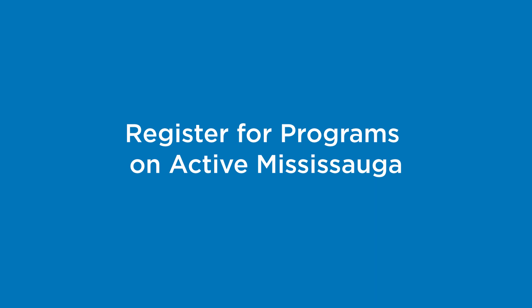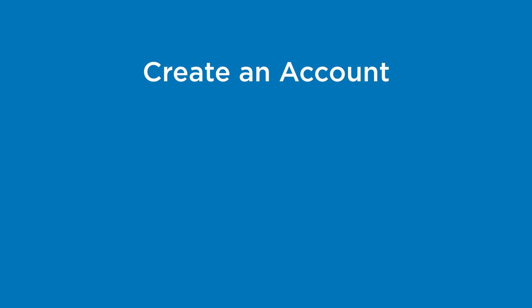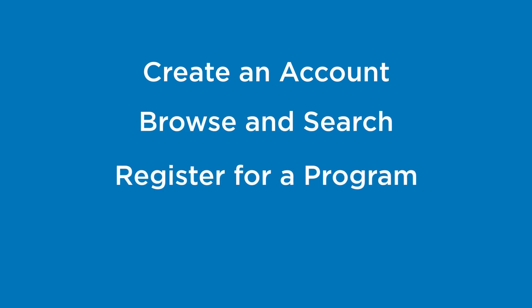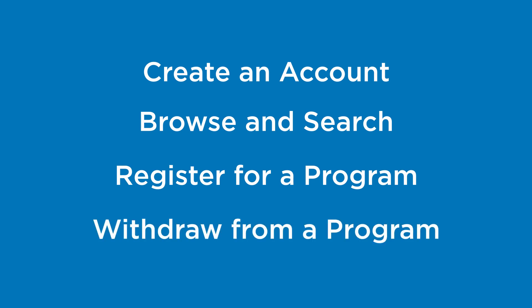This fall, all library, recreation, and culture program registrations will be done online through Active Mississauga. If you've ever signed up for a recreation course, you might already have an account. In this video, we'll be going over a few things you need to know, including how to create an account, browsing and searching, registering for a program or reserving a spot in a class, and how to withdraw from a program if you're unable to attend.